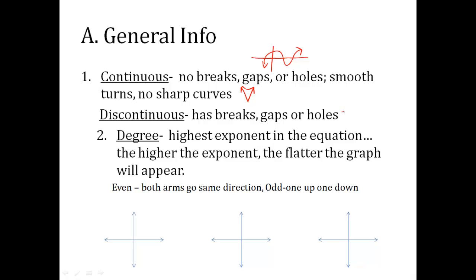A discontinuous graph would be something that could have sharp turns, breaks, gaps. It could be like this, kind of irrational. It could have a hole. It could have multiple issues, but there are breaks in the gap, so we call it discontinuous.